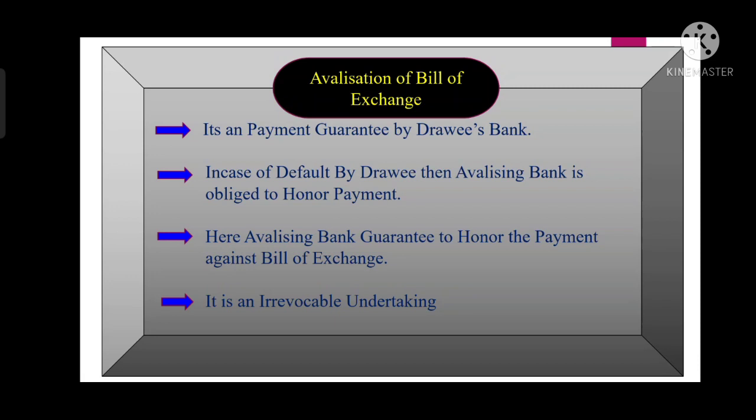Avalization of bill of exchange basically denotes an endorsement of the bill of exchange by the drawee bank with a view of guaranteeing payment if the drawee defaults in honoring the bill at maturity date. So it is a payment undertaking given by the drawee bank on behalf of the drawee against the bill of exchange drawn on the drawee, confirming that it will make the payment on maturity date.